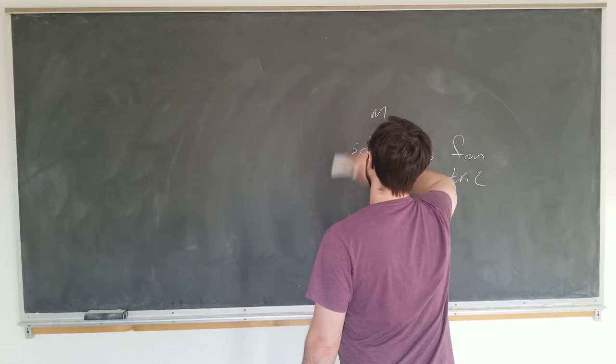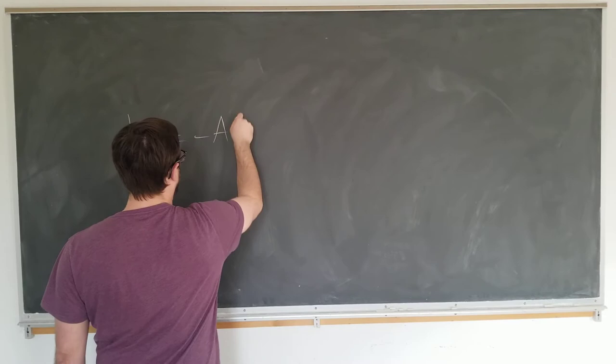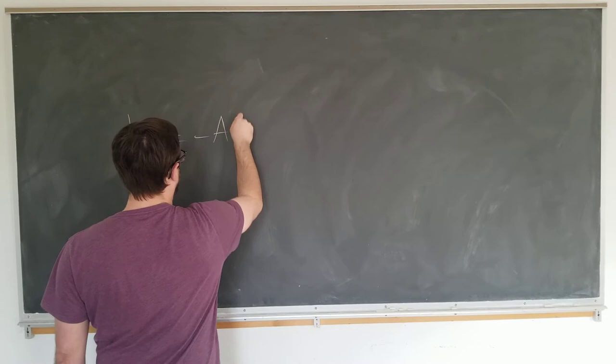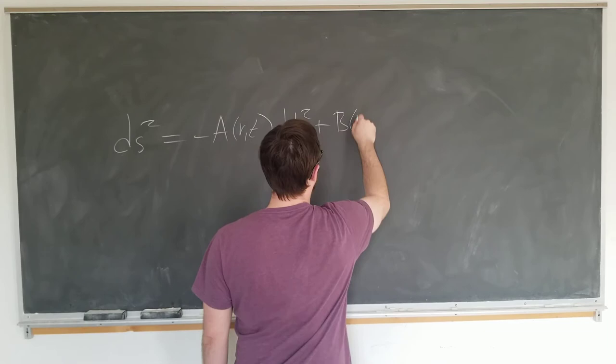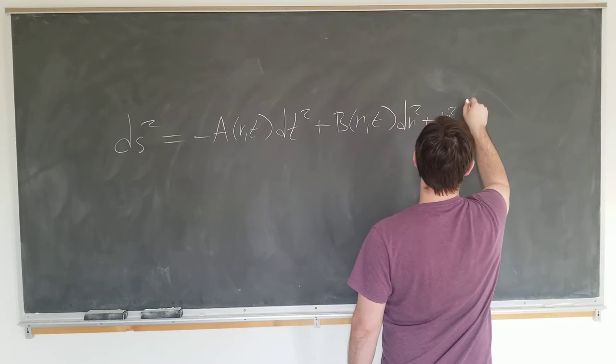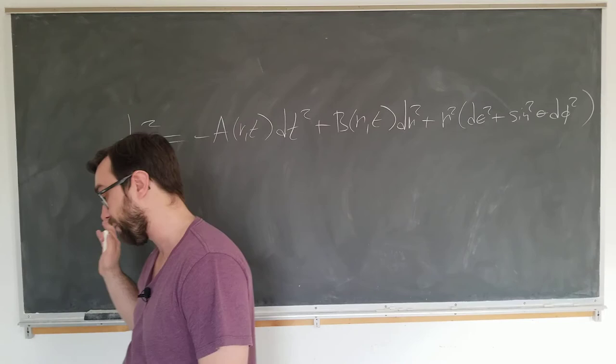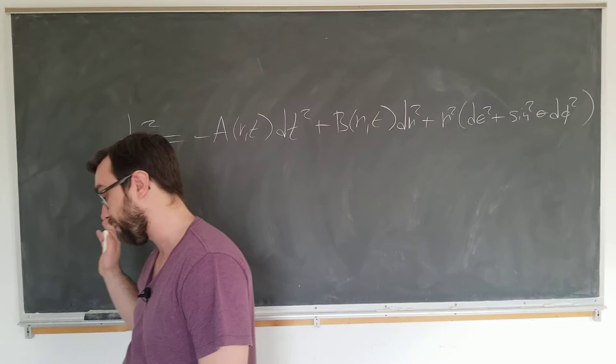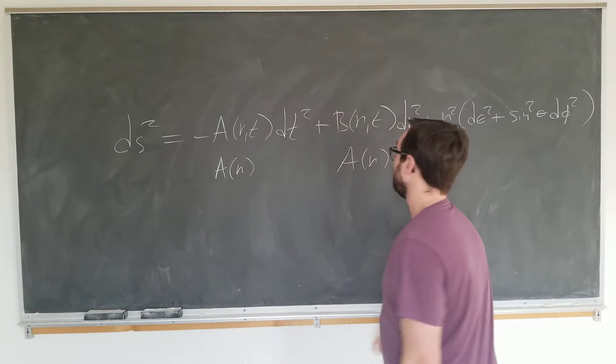So in this lecture, we will be considering the following metric: ds squared equals minus a of r and t dt squared plus b of r and t dr squared plus r squared d theta squared plus sine squared theta d phi squared. Now, the ordinary Schwarzschild solution looks the same as this one, but instead of having this and this depend on r and t, they just depend on r.